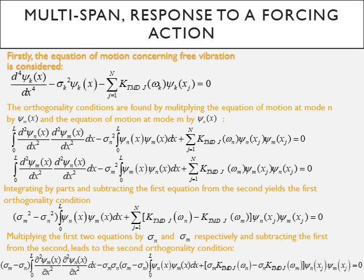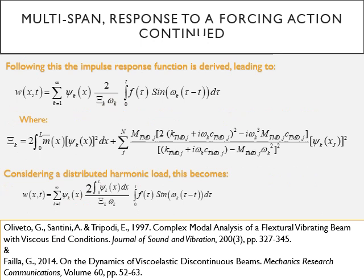Integrating by parts and subtracting the first equation from the second gives the first orthogonality condition. Then multiplying the first two equations by σ at n and σ at m respectively and subtracting the first from the second leads to the second orthogonality condition shown here.